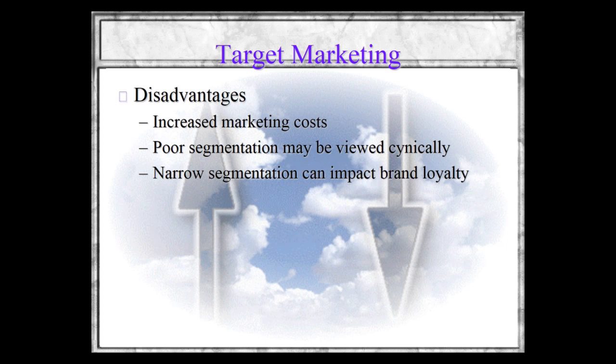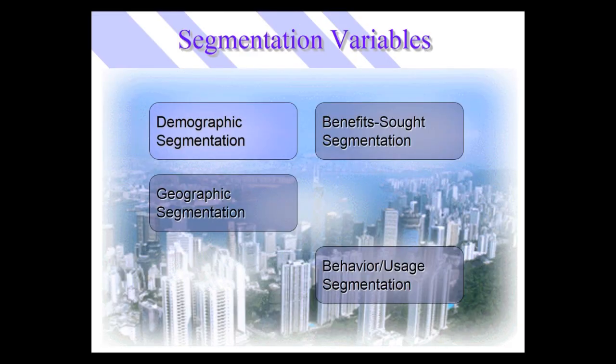Segmentable markets need to be heterogeneous, measurable, and big enough — substantial enough to matter. And we've got to be able to reach them, so they've got to be accessible and efficiently reachable. The major segmentation variables are demographics, benefits, behavior, and geographics.